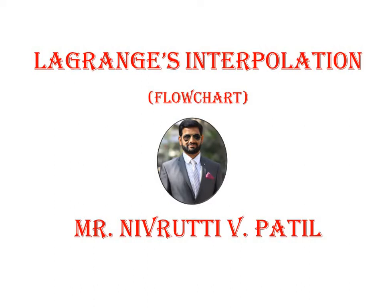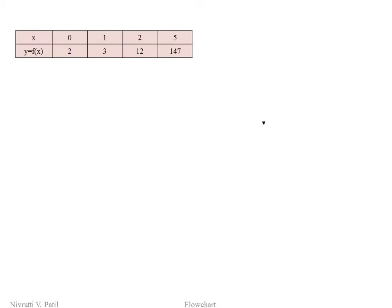The flowchart is the pictorial representation of the steps used by the computer. As per the problem statement of Lagrange's interpolation, we are given x values and y values, and we need to calculate the value of y at a given value of x. The given value of x will be termed as xg and the calculated value of y will be termed as yg.